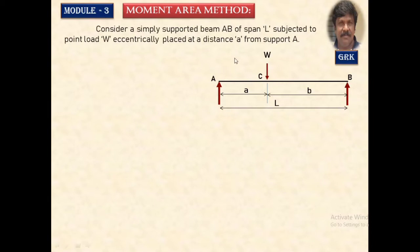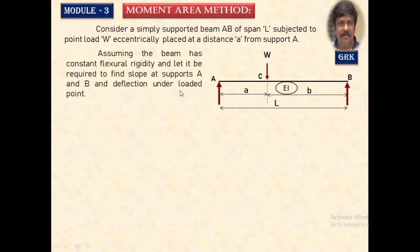Consider a simply supported beam subjected to a point load W at a distance 'a' from support A. We are going to calculate the slope at the supports, or anywhere desired, and the deflection under the loading system. We have considered a beam of uniform flexural rigidity EI.